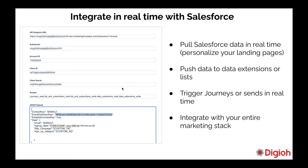It's all integrated in real-time with Salesforce as well as Marketing Cloud. You can trigger a journey in Marketing Cloud, you can push to data extensions, or push to multiple data extensions and multiple places in Salesforce, including custom fields, hidden fields, and UTM parameters.